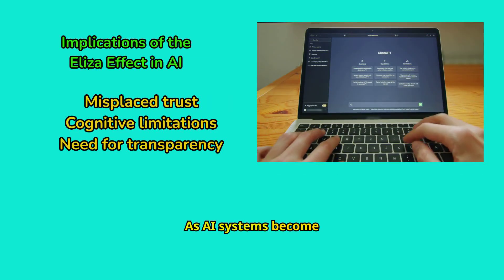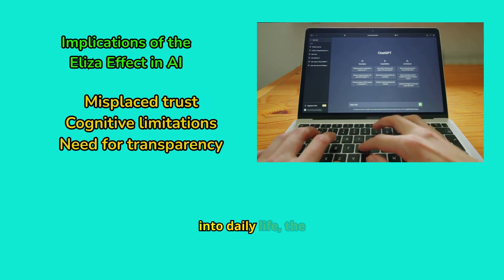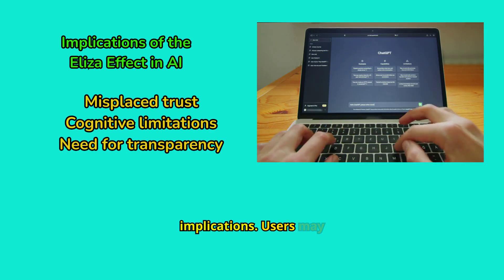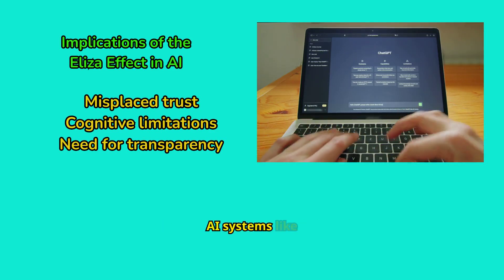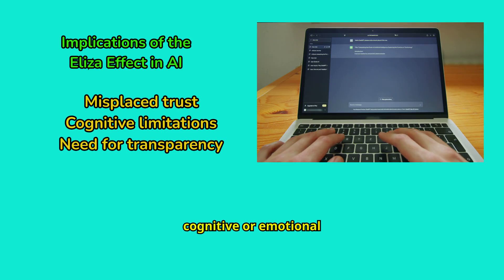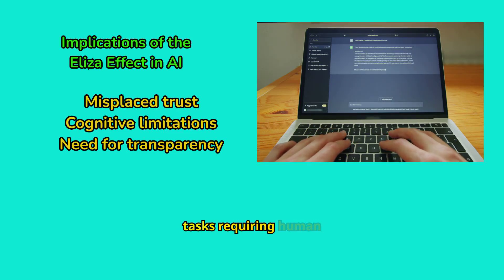As AI systems become more sophisticated and integrated into daily life, the ELISA effect has significant implications. Users may overestimate the capabilities of AI systems like ChatGPT, assuming they possess cognitive or emotional abilities. This can lead to misplaced trust in AI for tasks requiring human judgment, understanding, or care.